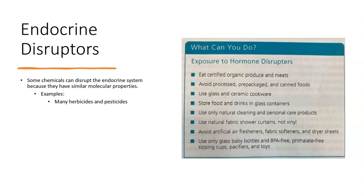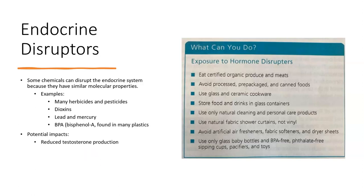Sources of endocrine disruptors include certain herbicides and pesticides — which is why it's extremely important to always wash your fresh produce — dioxins, which are byproducts from certain industrial chemicals, lead and mercury as discussed earlier, and BPA (bisphenol A), a chemical found in many plastics. Some potential and verified impacts include reduced testosterone or estrogen production, potential birth defects and developmental disorders. In certain fish and amphibian species that spend much or all of their life in water, there have even been cases of gender imbalances — for example, far more females compared to males.